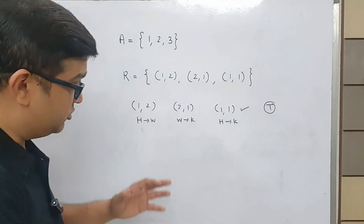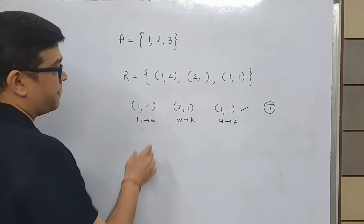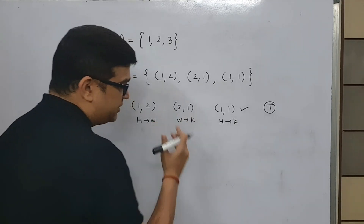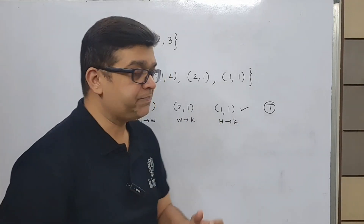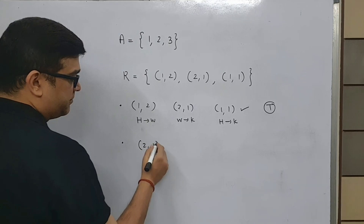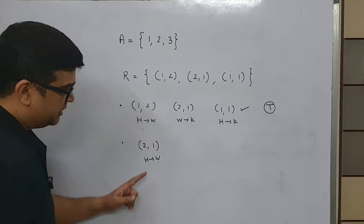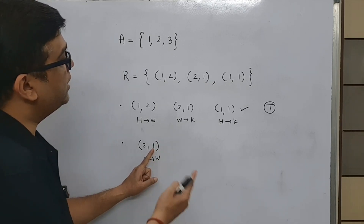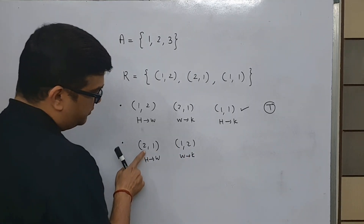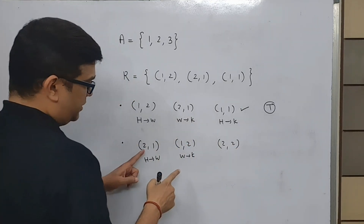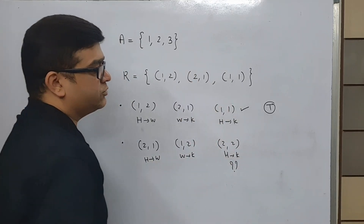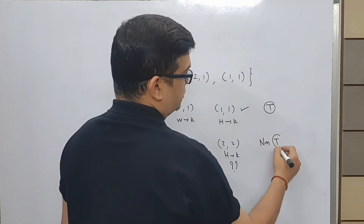But hold on, don't jump the gun. Check for every element. First I picked up (1,2) and checked whether husband is related to wife, wife is related to kid, and whether husband accepts the kid. Now let us pick up the second element: (2,1). This is like husband related to wife. Check whether wife has a kid — whether 1 relates to something. Yes, 1 relates to 2, so wife has a kid. Now check whether husband accepts the kid — whether (2,2) is present. Is (2,2) present? No, (2,2) is missing. So this says it is non-transitive.